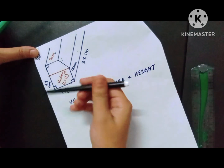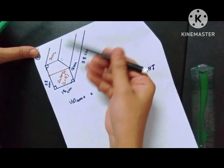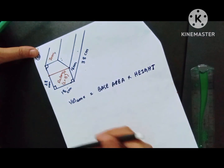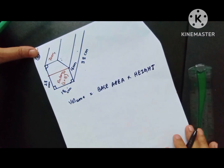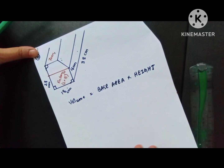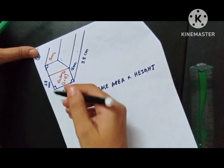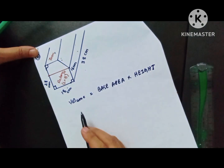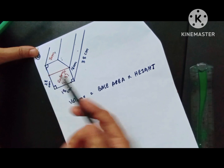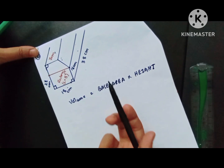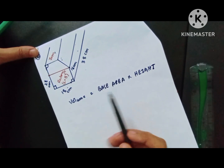This is the shape of the prism that you have to identify — that is the definition of the prism. When a solid has two identical faces, that type of solid is called a prism. This is the back side of the prism; what you can see on the front is your figure, which is a two-dimensional figure.